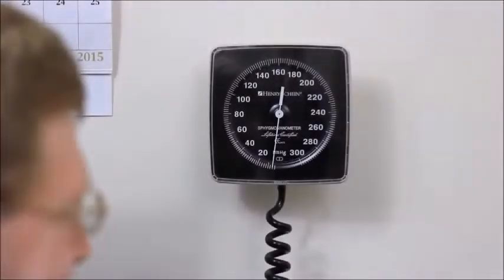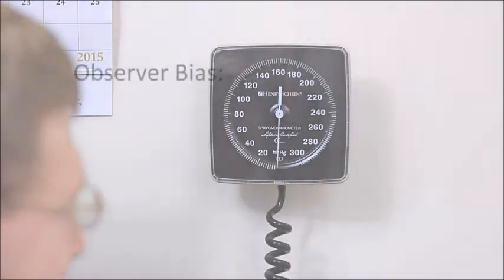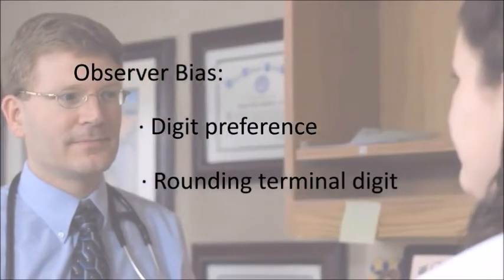Observer bias is the most common error that occurs in blood pressure measurements. It occurs because practitioners often show digit preference or round off the terminal digit. When two people use the same correct technique for measuring blood pressure, there should be little variation in the reading they obtain.